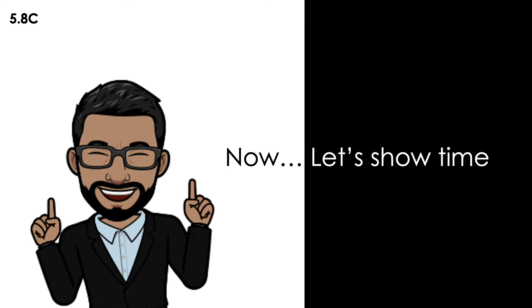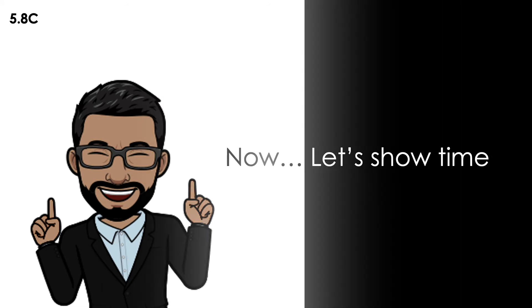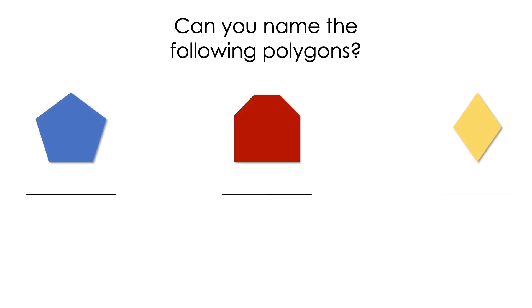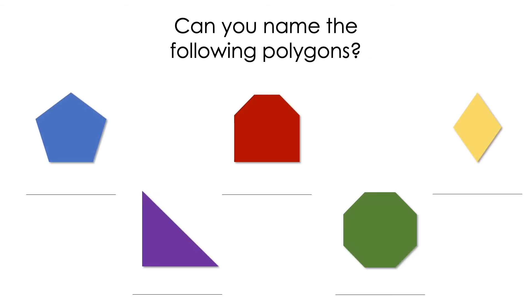Now, let's have show time. Can you name the following polygons? The first one looks like it has five sides — yes, five sides. And are all the sides and angles congruent? Yes, they are. So that means that this one is a regular pentagon.